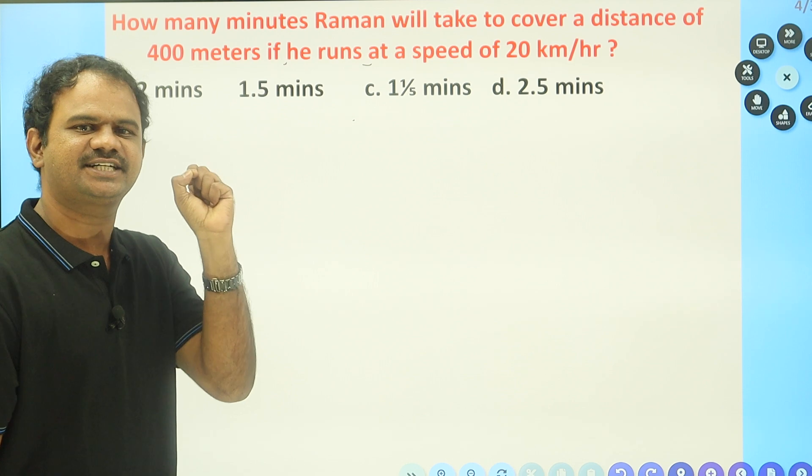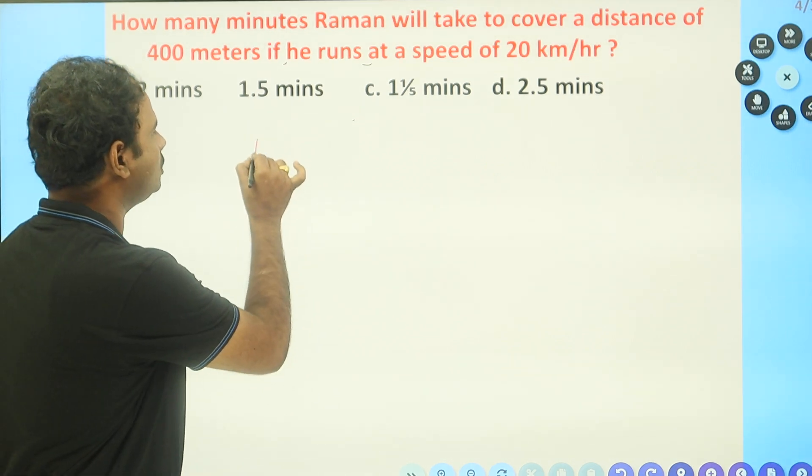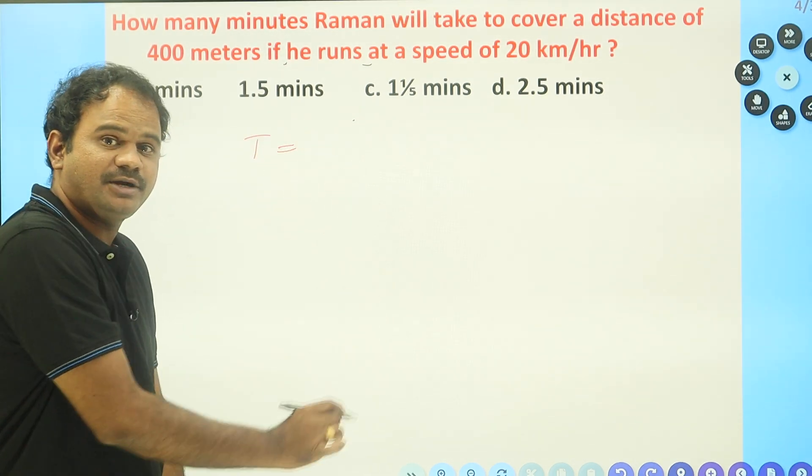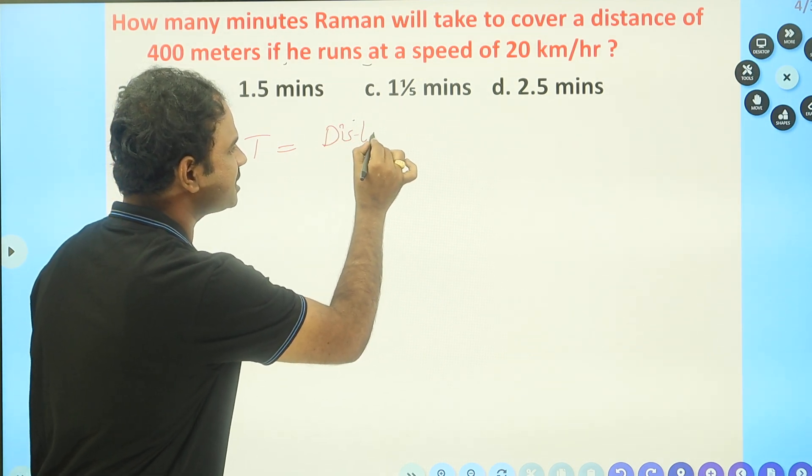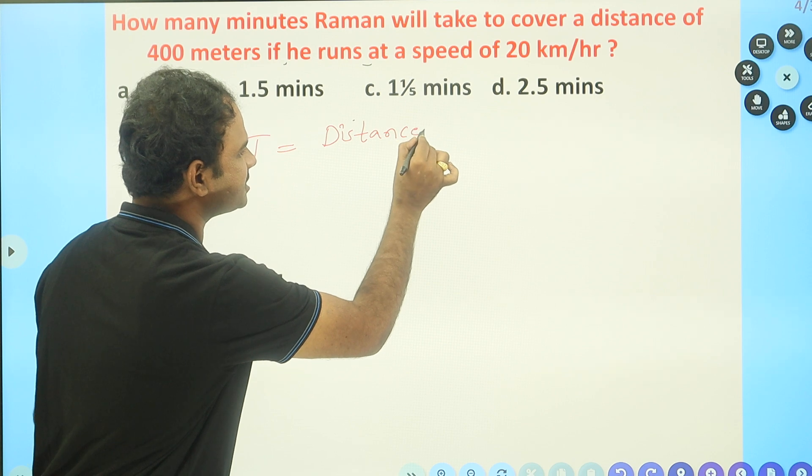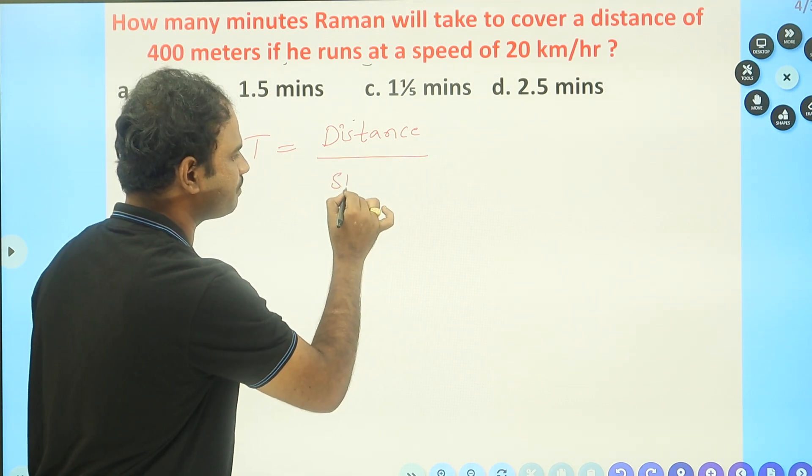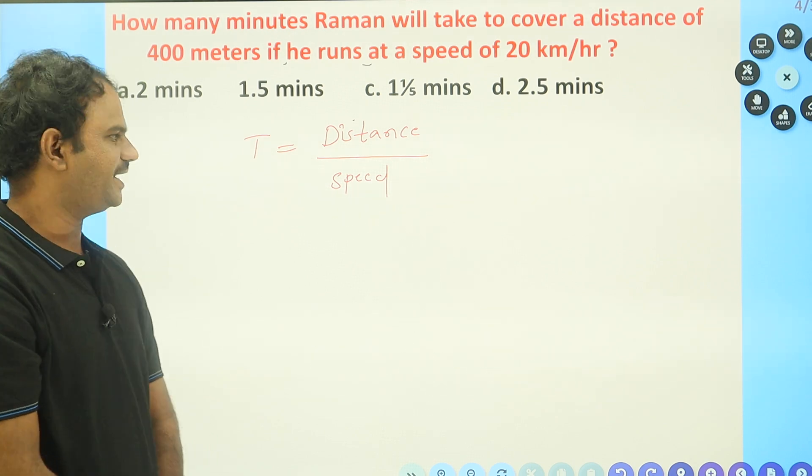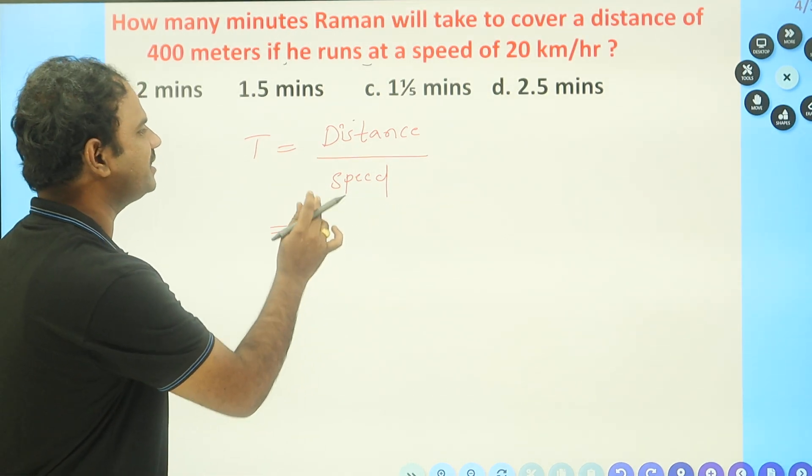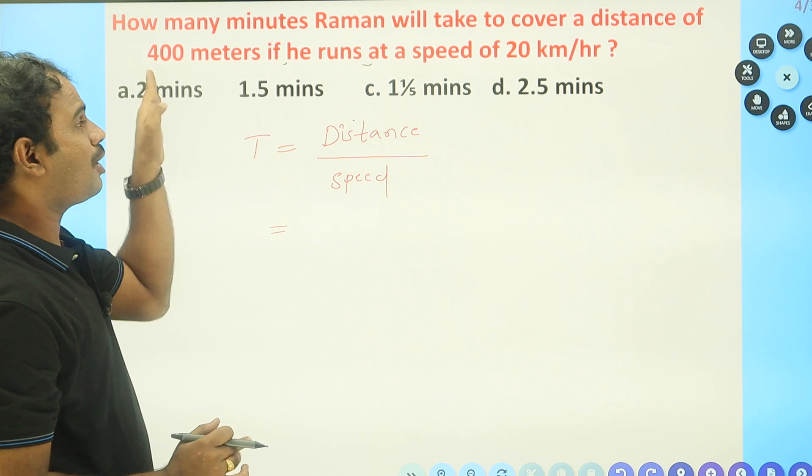What we have to find is how many minutes, so we have to find the time. What is the formula for time? Time is equal to distance divided by speed.